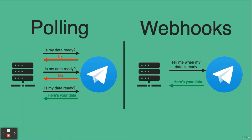On this slide you can see the difference between the two approaches. In the polling method, our bot will ask Telegram for data and repeat it each time. But in the webhook approach, Telegram will send the data when it becomes available.